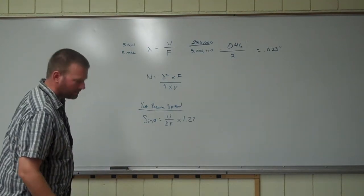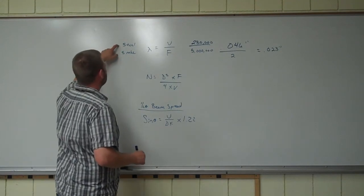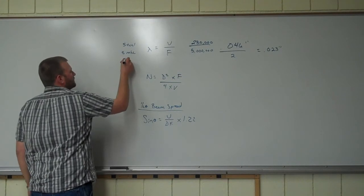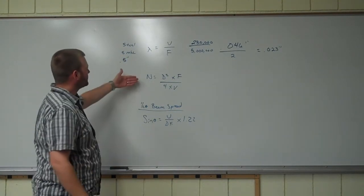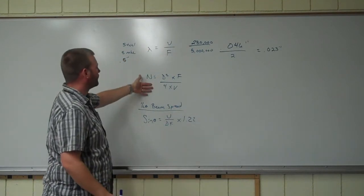The next one, near field, is along that same line. We're going to stick with these same numbers here. Steel, 5 megahertz. And we need a diameter of a transducer, so let's make it easy. Let's say it's half an inch. So we're just going to take these numbers and just plug them into this formula. It's really not that bad.